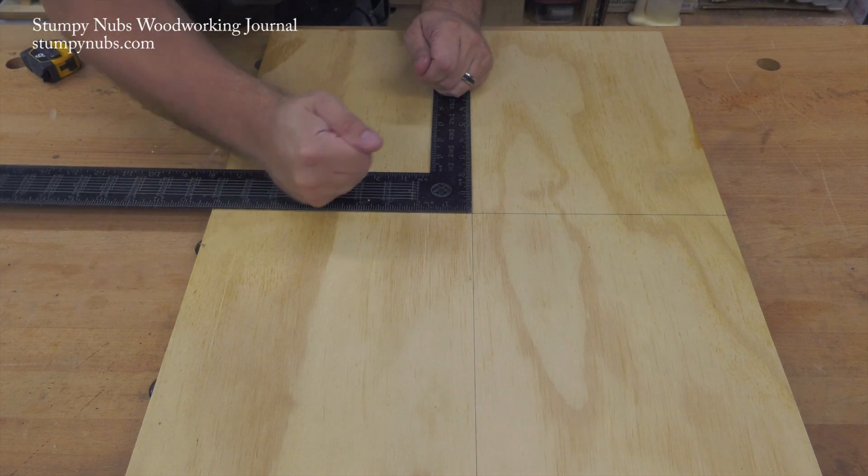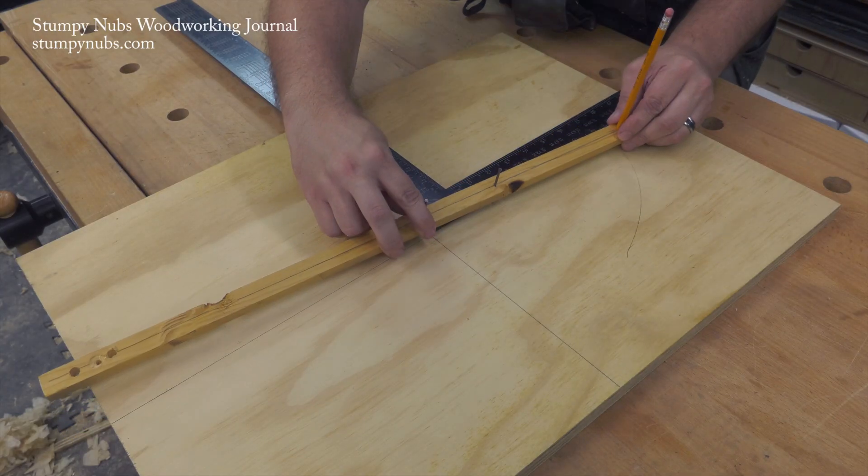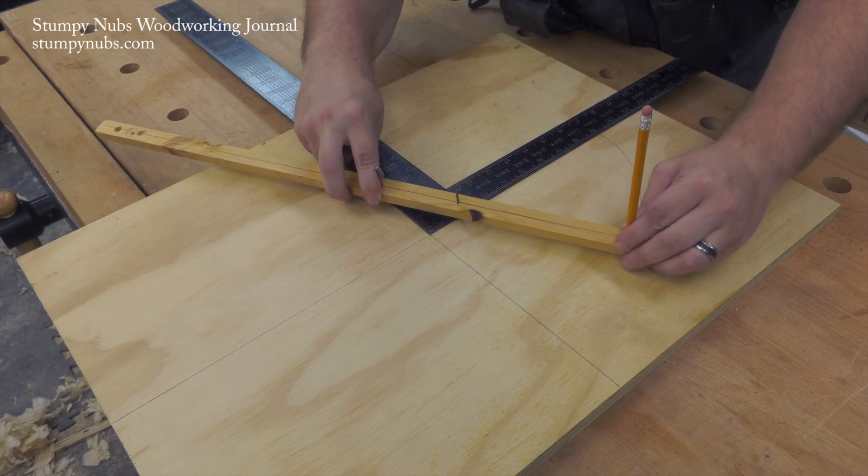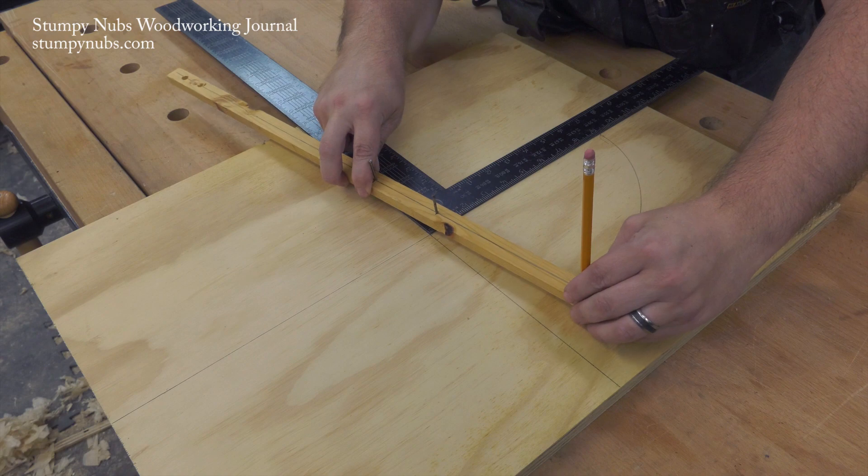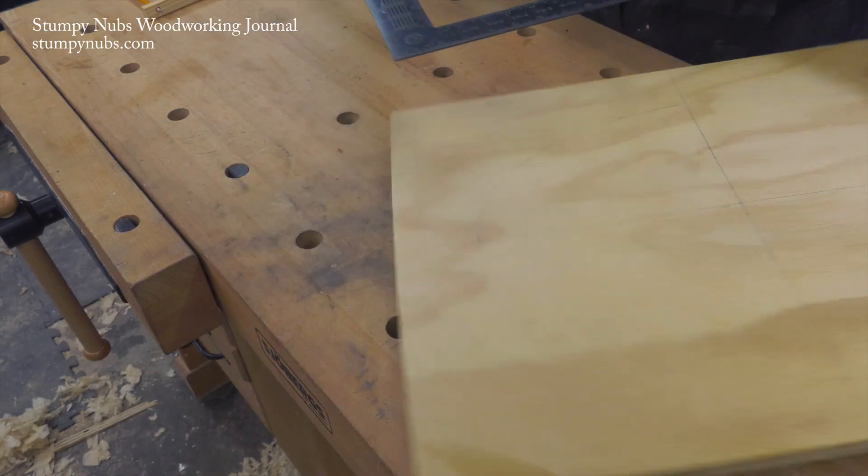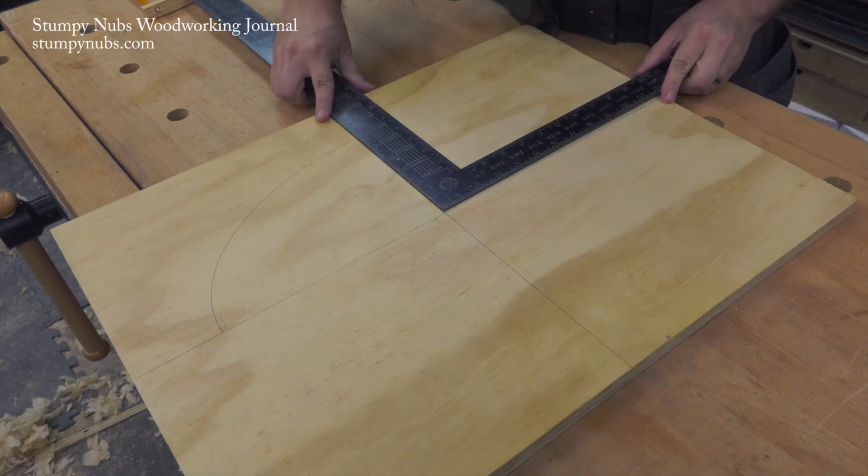Time to draw the ellipse. I've used a file to blunt the nails, so as they guide along the edge of the carpenter square, they don't dig into my workpiece. The key here is to keep both nails in contact with the square as you turn the stick and mark the ellipse.